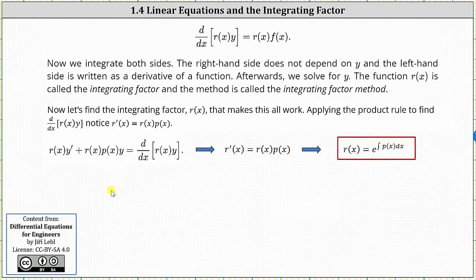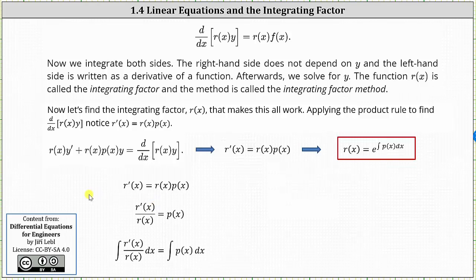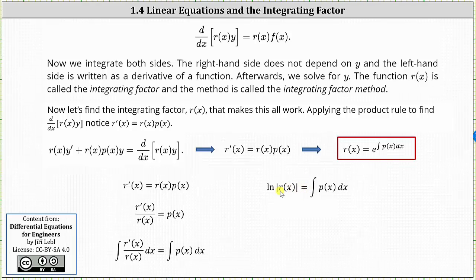Let's show where this comes from. Starting with r prime of x equals r of x times p of x, we divide both sides by r of x. Next, we integrate both sides with respect to x. The integral on the left should remind us of natural log, where u equals r of x and du equals r prime of x dx. Integrating on the left we have natural log of the absolute value of r of x. We could have a constant, but we're looking for any function r of x, so let's assume the constant is zero. Since we don't know p of x on the right, we leave the right side as an integral.